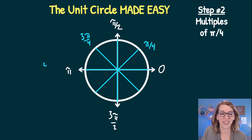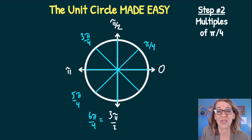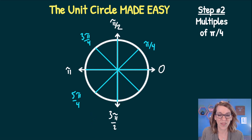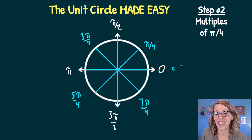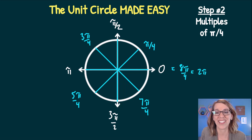Continuing to count: the next is 5 pi-fourths, then straight down at 6 pi-fourths which reduces to 3 pi-halves. Then 7 pi-fourths, and finally 8 pi-fourths, which reduces to 2 pi — landing us back where we started at 0.